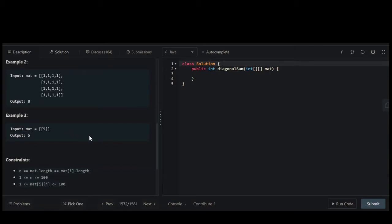Likewise, in this last example, we would have a diagonal of 5 and another diagonal of 5, but because the 5 is in there both times, we only include it once. So the answer would be 5 here.